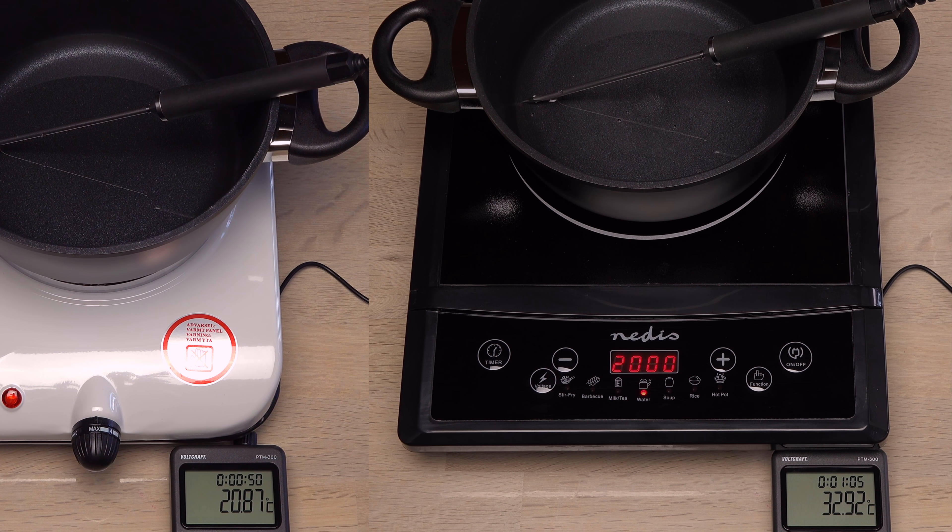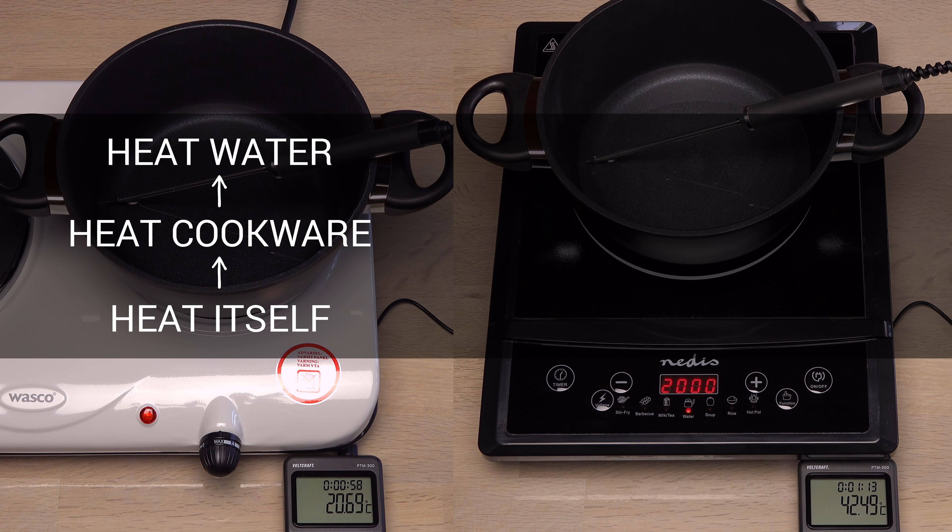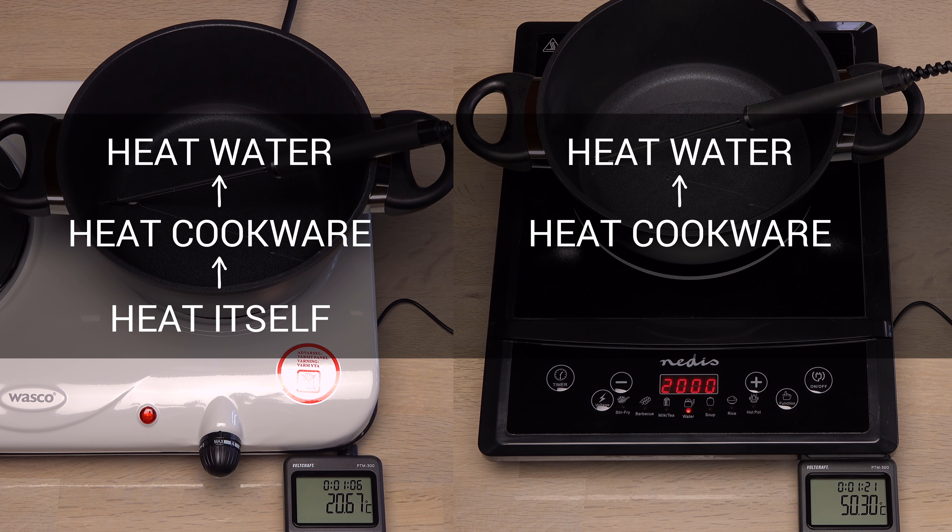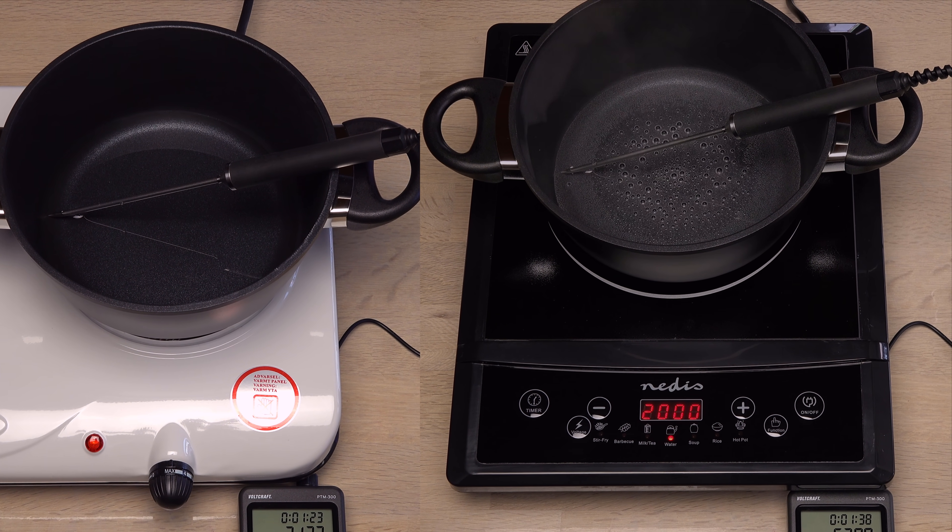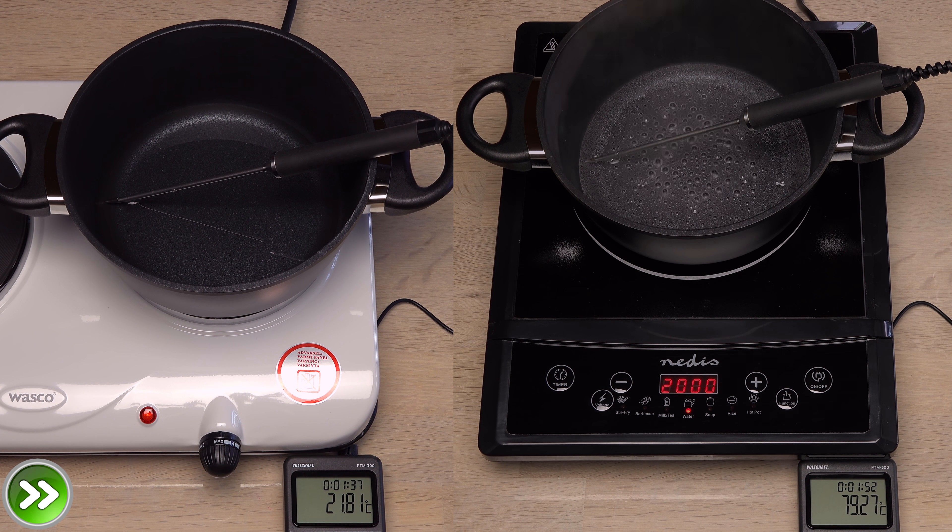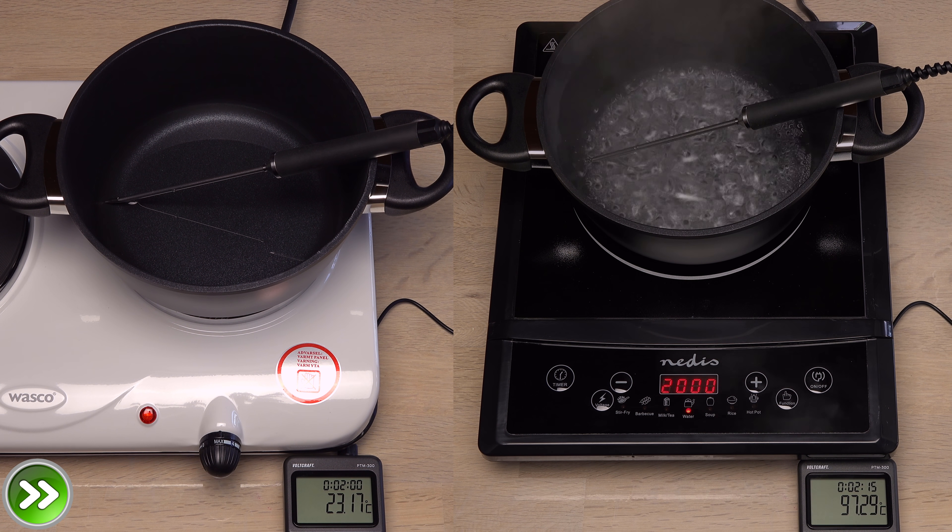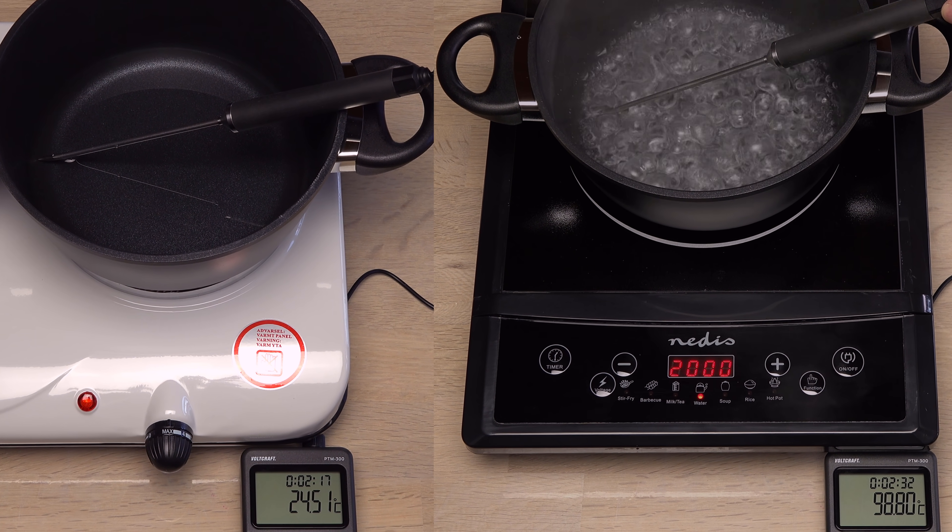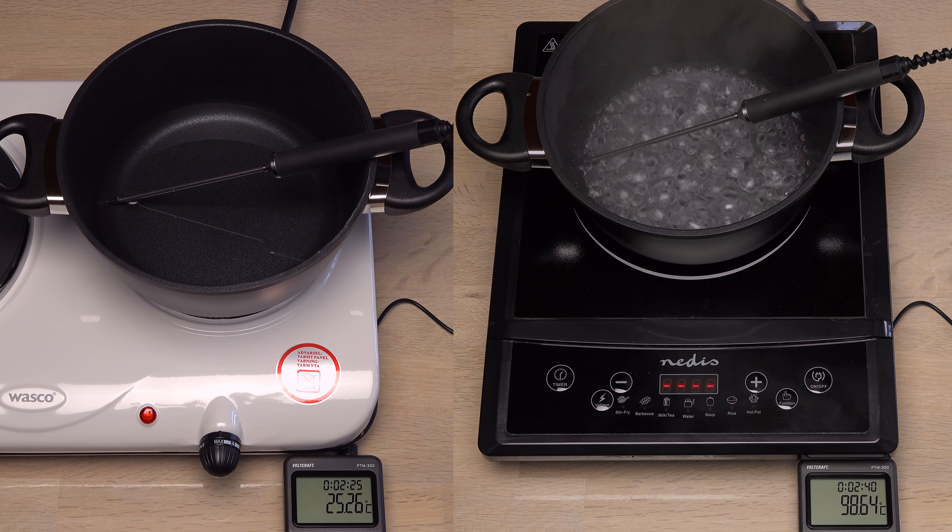30 seconds in and the induction cooker is already 10 degrees ahead. The resistive cooker first have to heat itself up, then heat the cookware before the cookware can heat the water. The AC electromagnet in the induction cooker skips the first step. It heats the cookware right from the start by electrical resistance to induced eddy currents and magnetic hysteresis loss inside the cookware. One minute in and we are already seeing bubbles of water vapor on one of them while the other... I swear it is turned on.